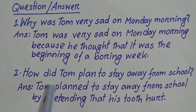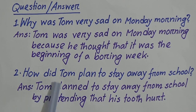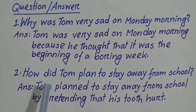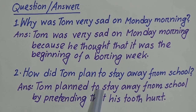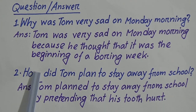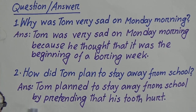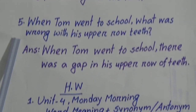Number two: How did Tom plan to stay away from school? Again we take the subject Tom. As the question starts with 'did,' we will answer in past indefinite tense. After subject comes the past form. As the question starts with 'how,' we add 'by.' The answer is: Tom planned to stay away from school by pretending that his tooth hurt.